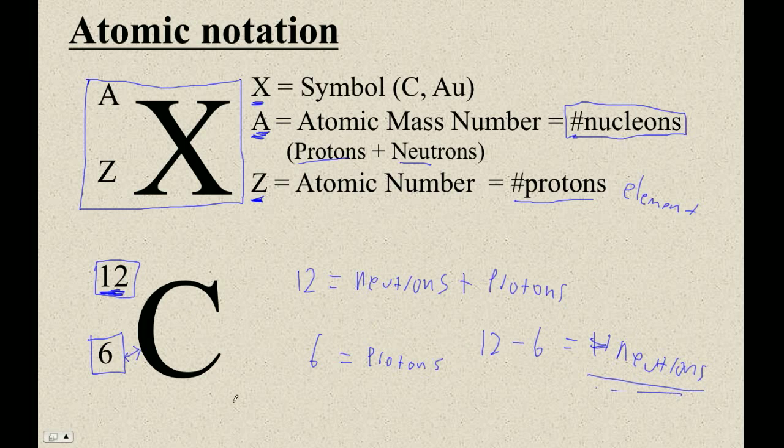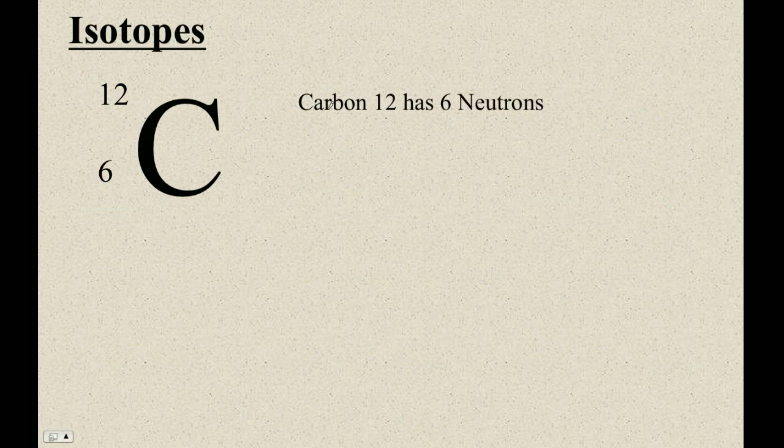So the number of neutrons is just A minus Z. That's the neutrons, and that's the hardest calculation we're going to do in this video. Okay, so let's talk a little bit more about isotopes. And let me show you the real chart of the elements. This is carbon 12, and we just talk about it, we call it carbon 12.